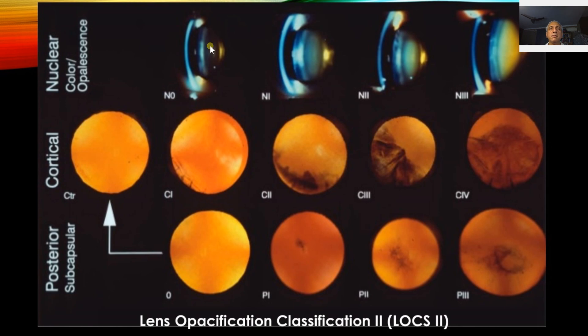Nuclear sclerosis tends to be very minimal in grades one and two with a slightly greenish color. Then you get yellow, and in grade four you see green-yellow. Then it becomes brown, and that brown area is called brunescent cataract.